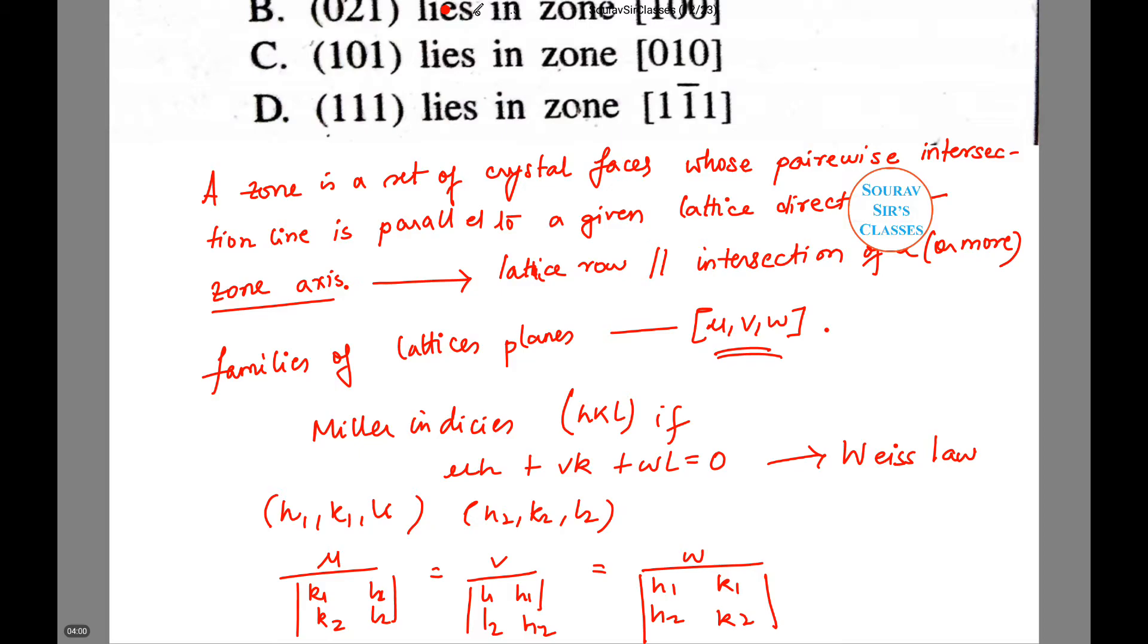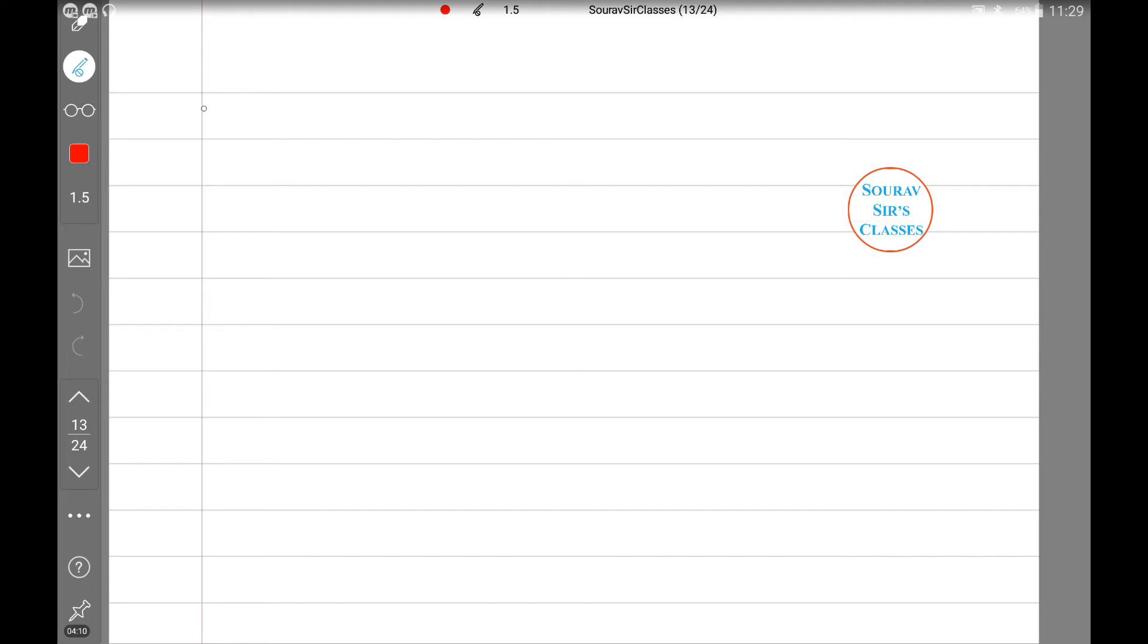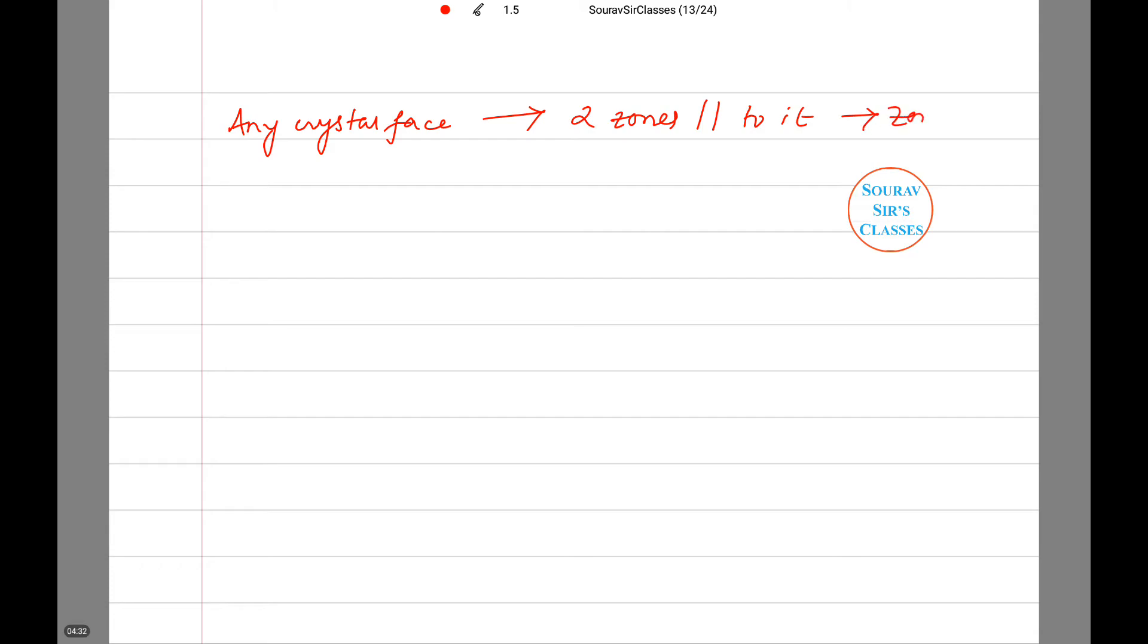Conversely, any crystal face can be determined if one knows two zone axes parallel to it. This is the zone law.